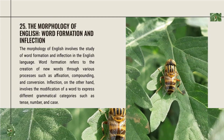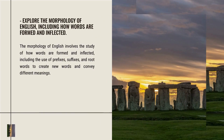The morphology of English involves the study of word formation and inflection. Word formation refers to the creation of new words through processes such as affixation, compounding, and conversion. Inflection involves the modification of a word to express different grammatical categories such as tense, number, and case, including the use of prefixes, suffixes, and root words to create new words and convey different meanings.